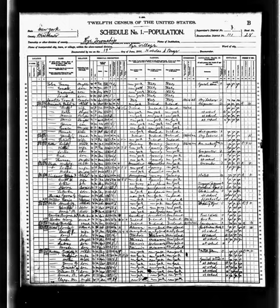Data availability: The original census enumeration sheets were microfilmed by the Census Bureau in the 1940s, after which the original sheets were destroyed. The microfilmed census is available in rolls from the National Archives and Records Administration. Several organizations also host images of the microfilmed census online, and digital indices.